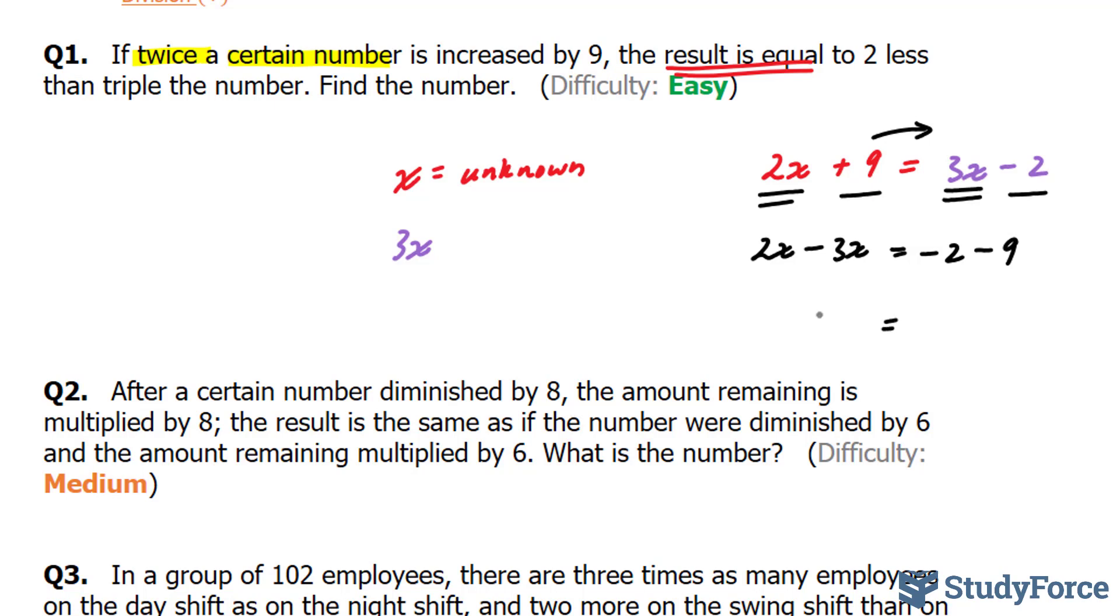On the left side, we're left with negative x. And on the right side, minus two minus nine is minus 11. You'll notice a negative on the left side and a negative on the right side. That will cancel out. And you're left with x is equal to 11. So what satisfies this situation is an unknown of 11.